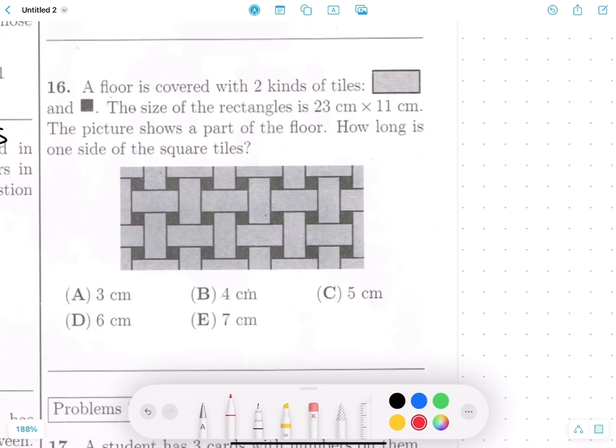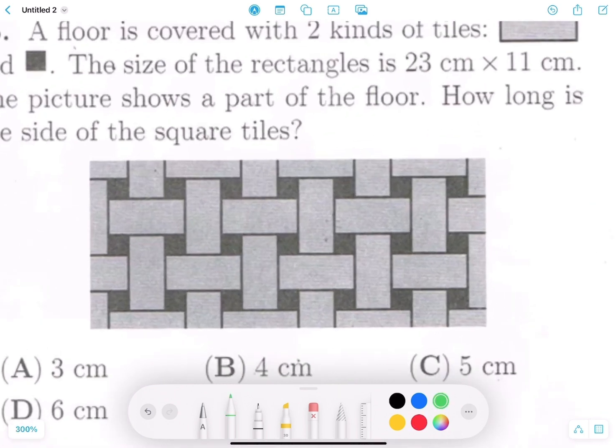Number 16. A floor is covered with two kinds of tiles. The rectangle one and the square one. The size of the rectangles is 23 centimeters by 11 centimeters. The picture shows a part of the floor. How long is one side of the square tiles?